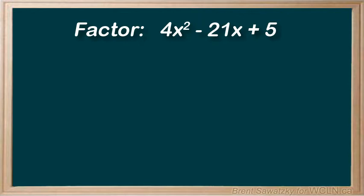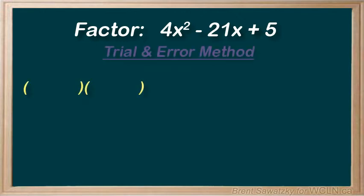First, we know the result will be in the form of two sets of brackets. Our first method, we commonly call the trial and error method. Now, it's not purely trial and error, in that we don't start plugging all kinds of numbers into the brackets. We do narrow it down first by noting that the first terms in each set of brackets must multiply to give our 4x².